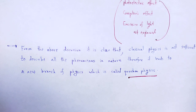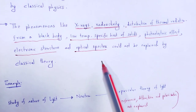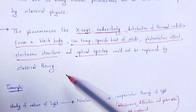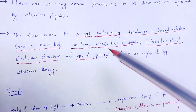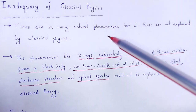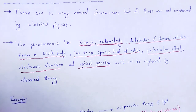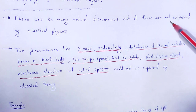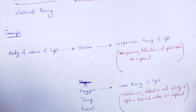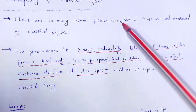In upcoming videos, we will discuss all the phenomena mentioned here — photoelectric effect, Compton effect, black body radiation, and low temperature specific heat of solids — which are not explained by classical physics. We will discuss these phenomena in detail and show how classical physics fails to explain them. So, with the help of this video lecture, we understand the concept of inadequacy of classical physics.